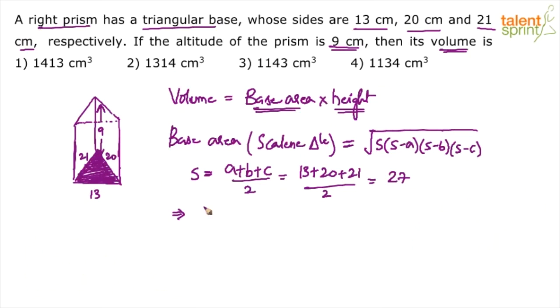So what will be the area? The base area will be equal to root over 27 into 27 minus a. 27 minus 13 basically. What is 27 minus 13? 14. Into 27 minus 20 is 7. Into 27 minus 21 is 6. You have to simplify this.